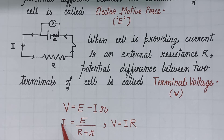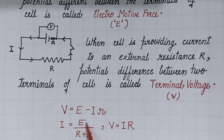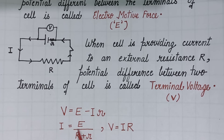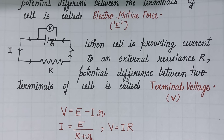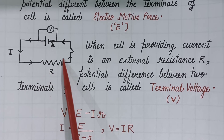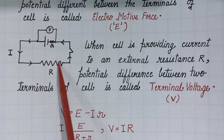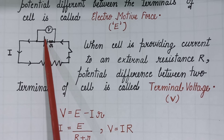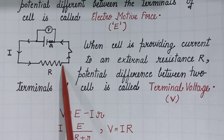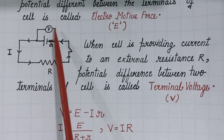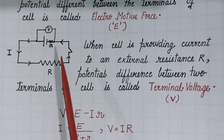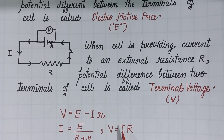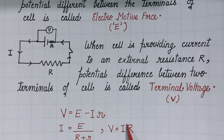If you want to calculate current and EMF is given in the question, then the formula you will use is: current I = EMF of the cell divided by the total resistance of the circuit. The potential drop across the external resistance R is the terminal voltage V. Terminal voltage V, or the potential drop across the external resistance, can be calculated as: current given by the cell multiplied by the external resistance, i.e., V = IR.